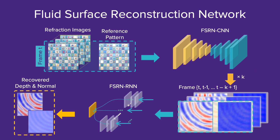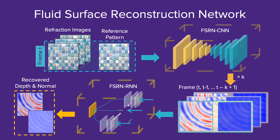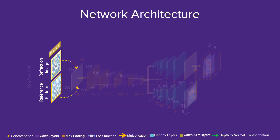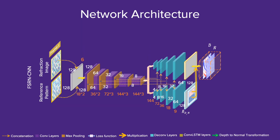Our fluid surface reconstruction network consists of two subnets: an encoder-decoder based convolutional neural network for per-frame depth and normal estimation, and a recurrent neural network for enforcing temporal consistency across multiple frames.